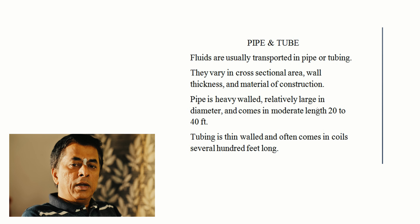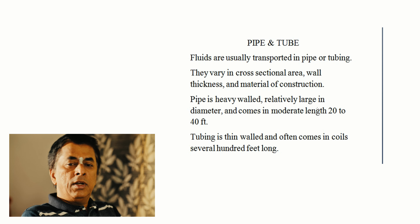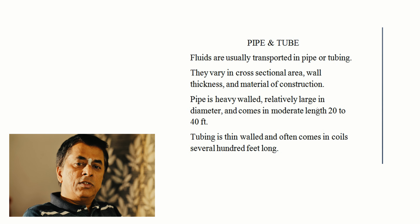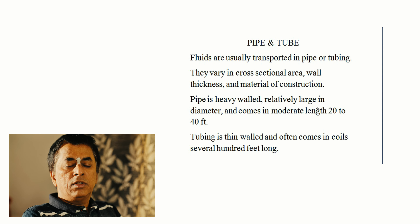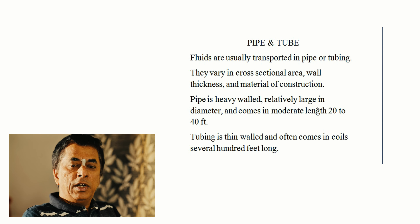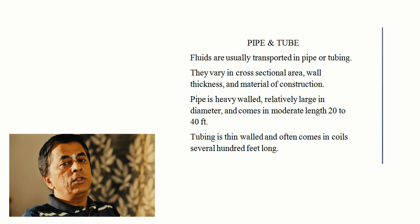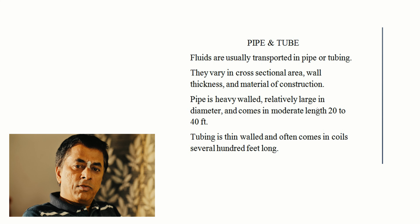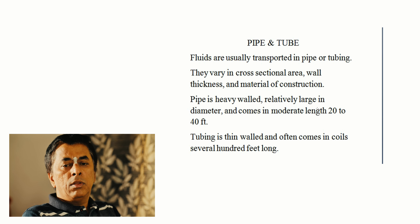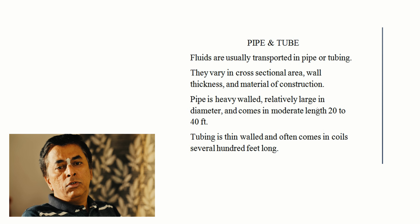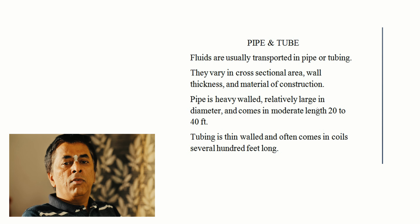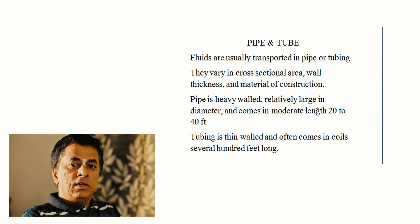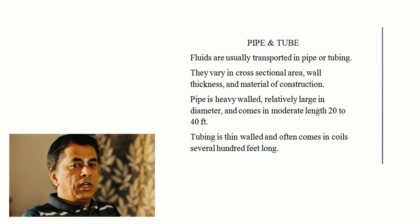If a pipeline must withstand high pressures — such as in Haber's process where ammonia is manufactured at 100 to 1000 atmospheres — the wall thickness must be very high. Conversely, for reactions at low pressures, the atmospheric pressure on the outside exceeds the pressure inside the pipeline, so the wall thickness also varies accordingly.